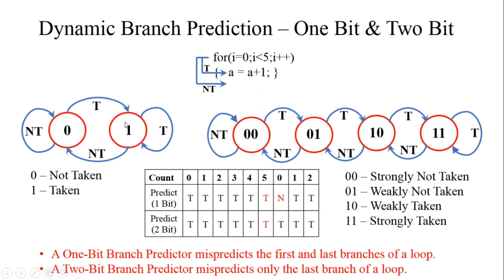Initially, the for loop is in state 1 — the taken state. When i=0, since i<5, the taken state predicts the branch should be taken, which is correct. When i=1, still in taken state, it again predicts taken — correct. This continues until i=4, where the taken state still predicts taken, which is correct. So from i=0 to i=4, all predictions are correct.